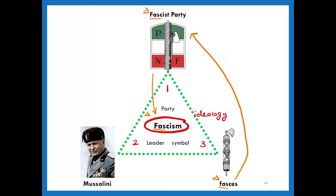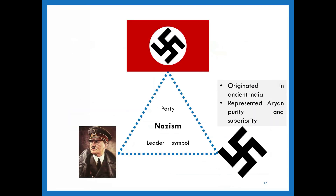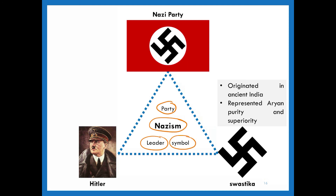The same triangle can be used for the coming two countries, Germany and Japan. For Germany, there is another triangle in blue. At the center is the ideology, and you can find the party, leader, and symbol. What you have to remember is to change the name of the party, the leader, and the symbol accordingly. That's all for the three countries of totalitarianism. This is the end of this lecture video, and in the coming one, we are going to focus on Germany and Japan.